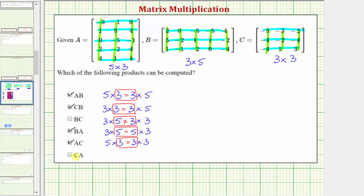Finally, we have matrix C times matrix A. Matrix C is a three by three matrix and matrix A is a five by three matrix. The number of columns in the first matrix does not equal the number of rows in the second matrix, which means we cannot compute C times A. I hope you found this helpful.